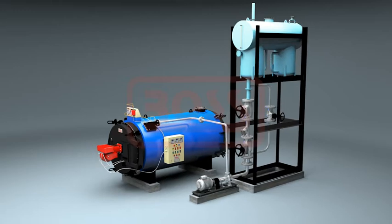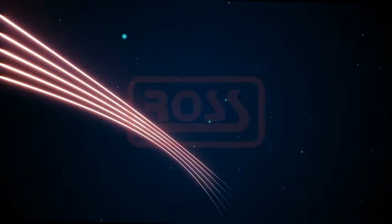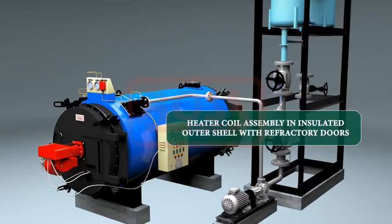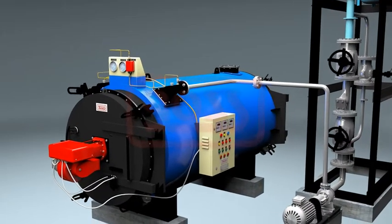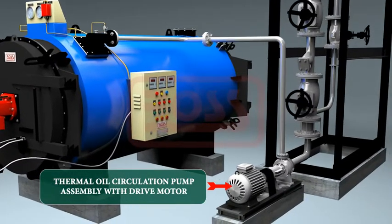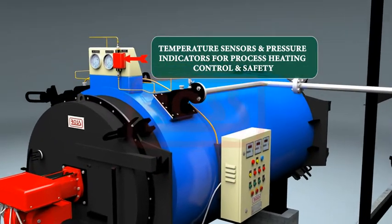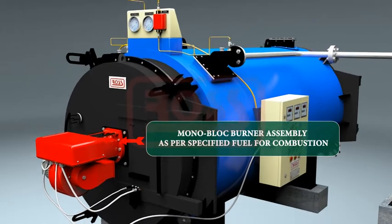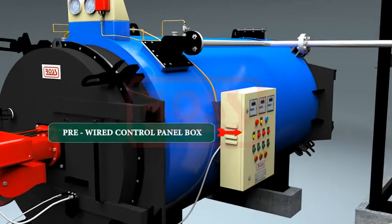These thermal oil heaters are made in conformity with international standards for high temperature control and safety. Each alpha thermal oil heater consists of: heater coil assembly in insulated outer shell with refractory doors, thermal oil circulation pump assembly with drive motor, temperature sensors and pressure indicators for process heating control and safety, monoblock burner assembly as per specified fuel for combustion, and pre-wired control panel box.